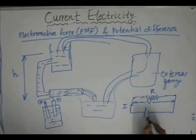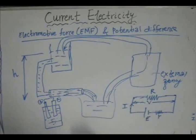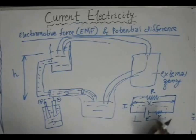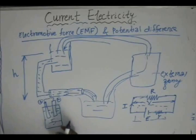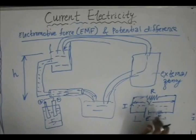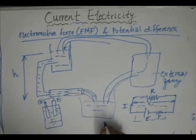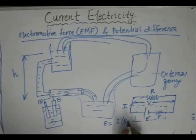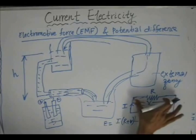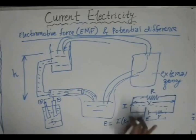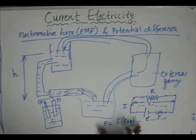For a cell, we have an EMF E plus some internal resistance r, which is always in series with the cell — this entire combination comprises the cell. For an ideal cell, the internal resistance is zero. To decrease internal resistance, we can use an electrolyte with higher conductivity or decrease the separation between the two electrodes. Applying Ohm's law, the total EMF is E = I(R + r), where R is the external resistance and r is the internal resistance.